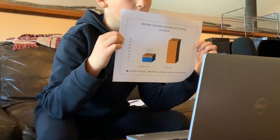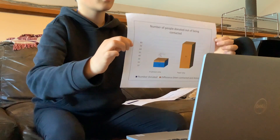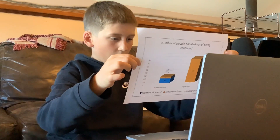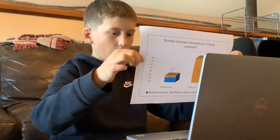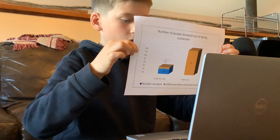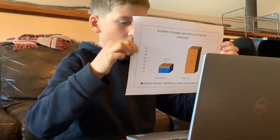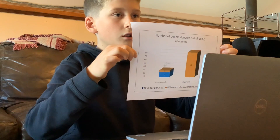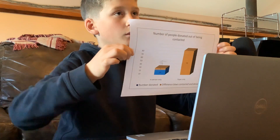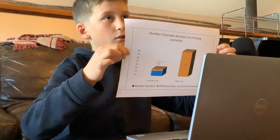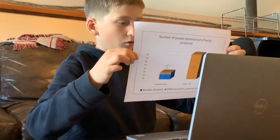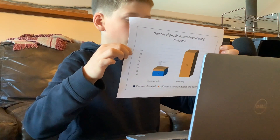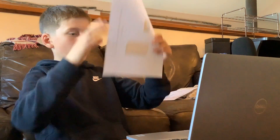This chart shows what percentage of in-person and online donors donated. If it's red, that means the person did not donate. For in-person: 16 blue, 5 red — five people out of 21 did not donate. They said they'd think about it, do it online, or said no thank you. For paper only, no one donated, so the whole bar is red — all 80 people.